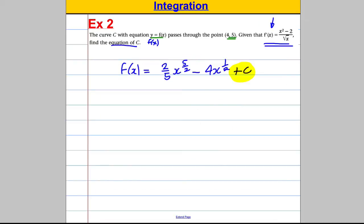Continue on another page. There is our f of x with this constant, and I'm going to say I'm going to sub x, y equals 4, 5, in to find c. So basically, we're going to substitute in x is 4, and y is 5. When I put x is 4 in, I would get f of 4 here, the y value, which is 5.